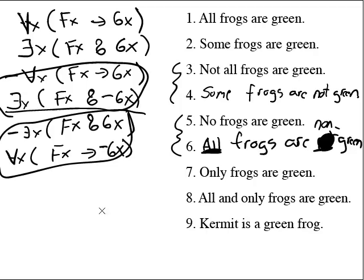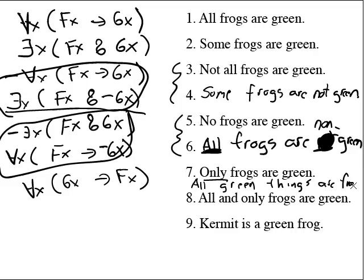We're up to sentence seven. Number seven says, only frogs are green. Is only frogs are green a universal, existential or singular? It is a universal sentence. Universals have universal quantifiers with arrows. But what's the relationship between only and all? Only is a reversed all. So what we're going to get here is actually gx arrow fx. What only frogs are green really means is that all green things are frogs. All green things are frogs.